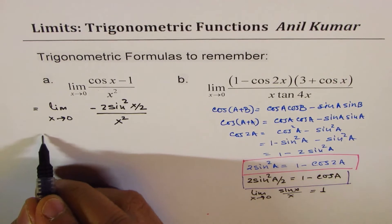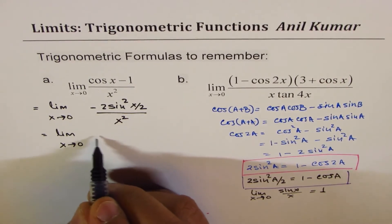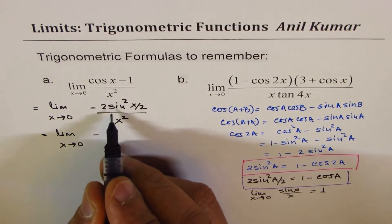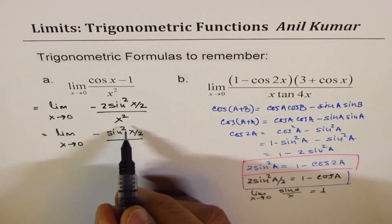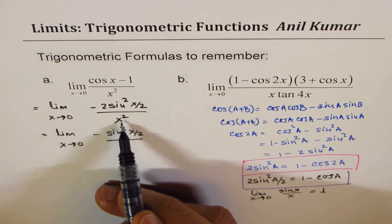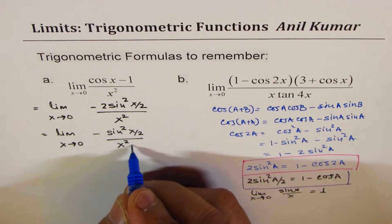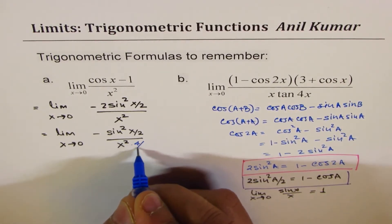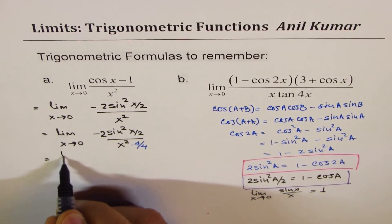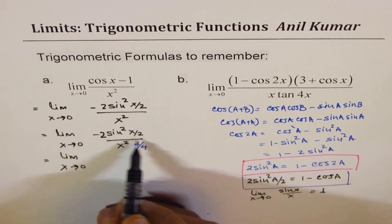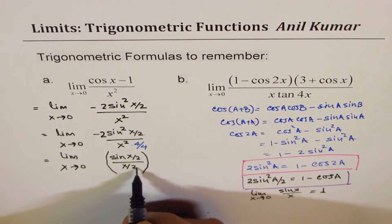Now we'll apply the limit. So we say limit x approaches 0. We want x/2 in the expression. We have minus, and we have sin squared(x/2) over x squared. But we need x/2 whole squared, which means a factor of 4 is involved. So we multiply this by 4 over 4. I'll go in steps. So we can write this as: sin(x/2) over (x/2), whole squared.